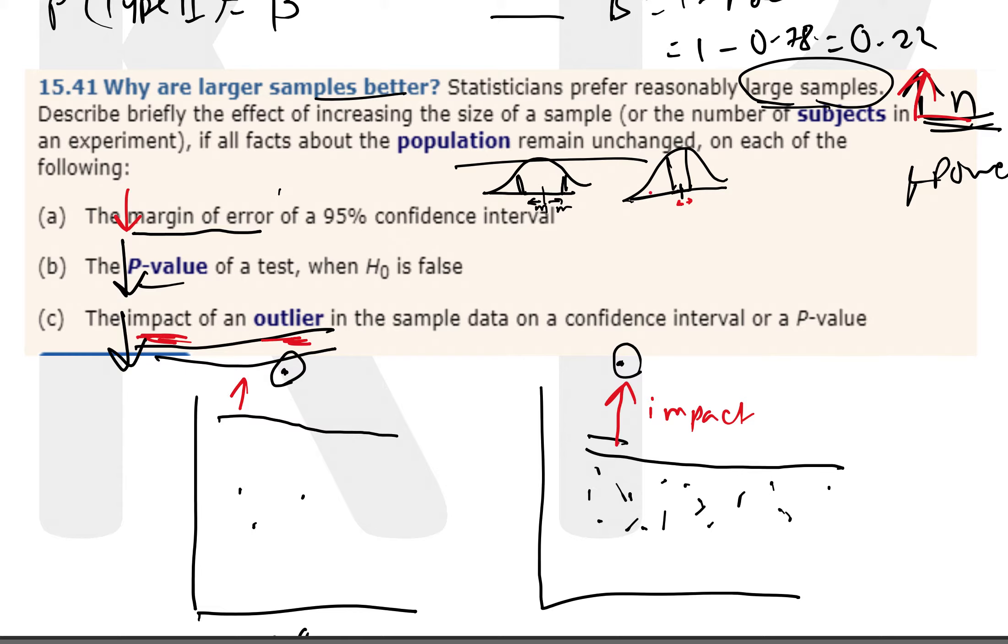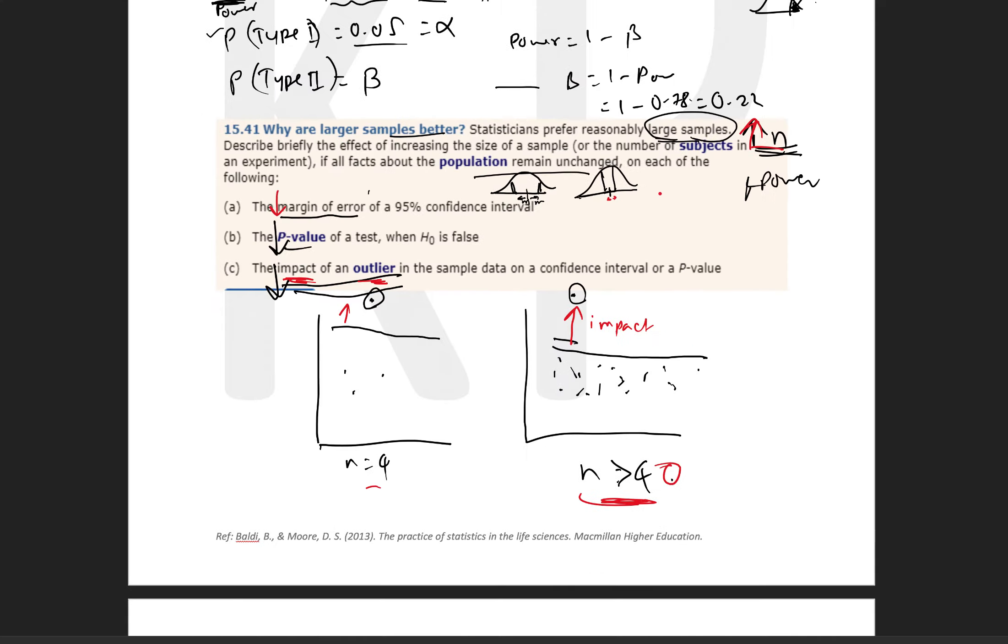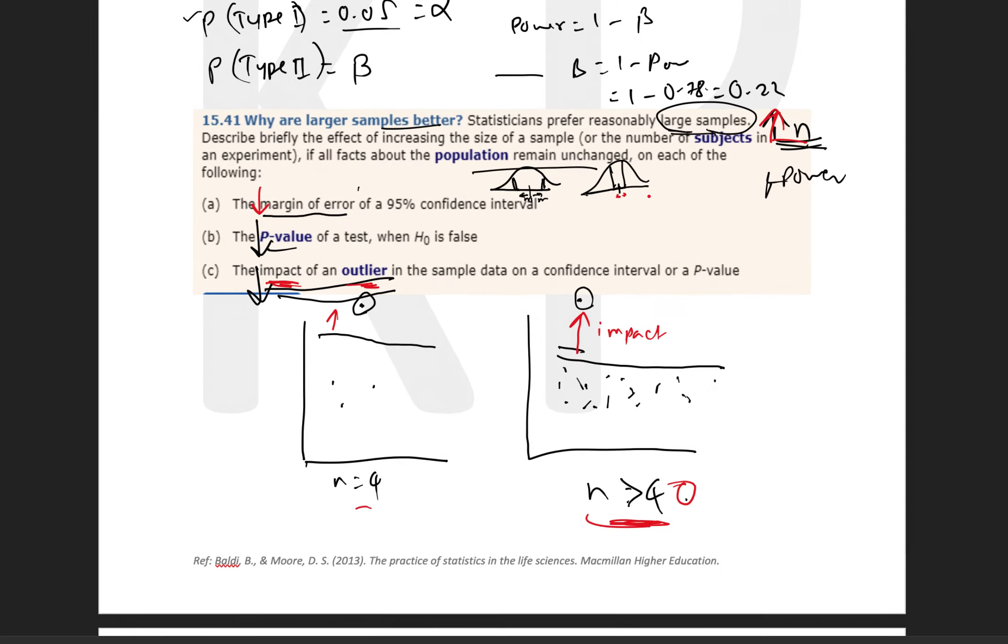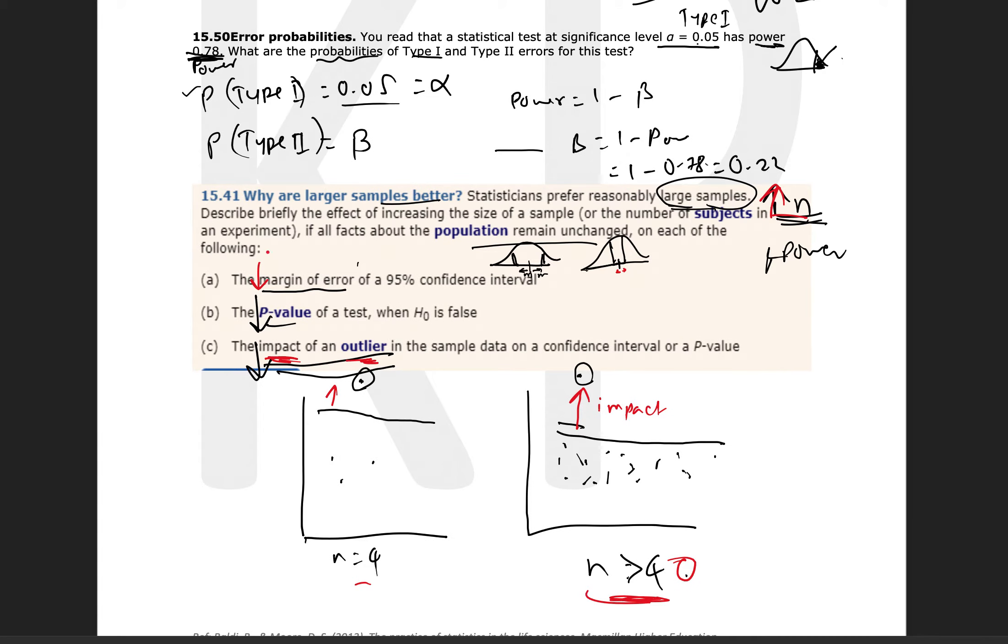Because it's broader, this is narrower. So we would say that our margin of error with increasing sample size or larger sample is going to go down.